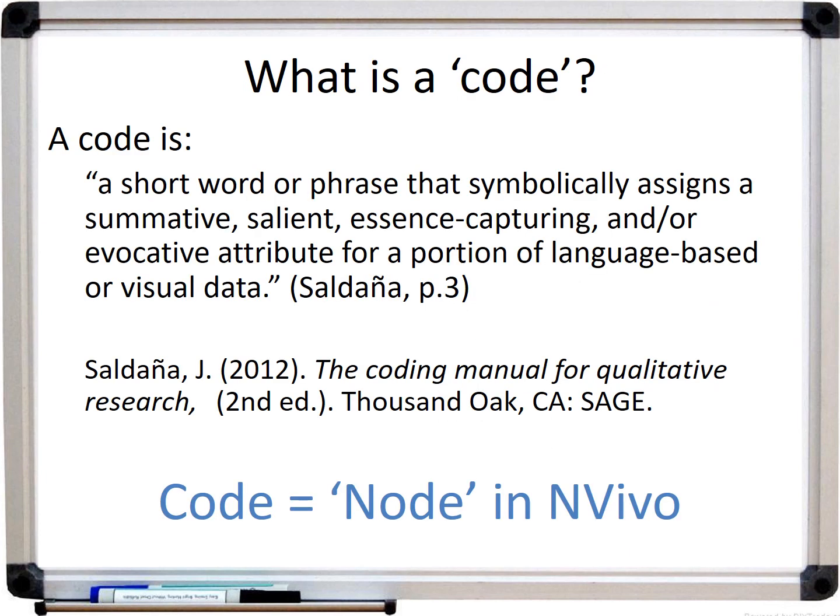Saldana describes a code as a short word or phrase that symbolically assigns a summative, salient, essence-capturing, and or evocative attribute for a portion of language-based or visual data. In NVivo, you use the node feature to create codes.